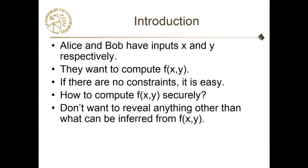Let's give a brief introduction. The whole problem definition is that there are two parties, Alice and Bob, with private inputs x and y respectively. The problem is they want to compute a function f(x, y). It can be any function. Without constraints, it's pretty easy — all Alice has to do is send her private input x to the other party, Bob can compute f(x, y) and send it back to Alice. There are no constraints; it's an easy problem.